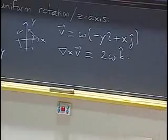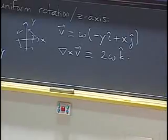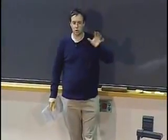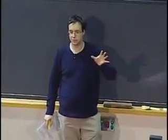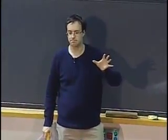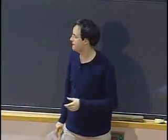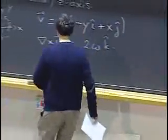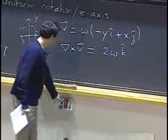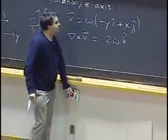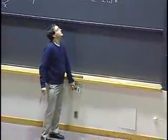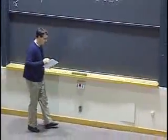Typically, the velocity vector for this would be minus y i plus x j, times maybe a number omega which represents how fast we are spinning — the angular velocity in radians per second. And then, if you compute the curl of this, you will end up with 2 omega times k.